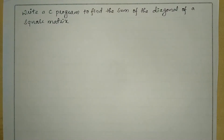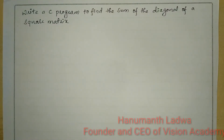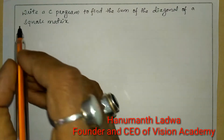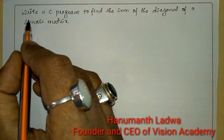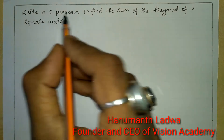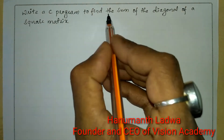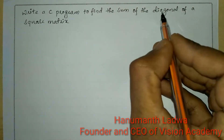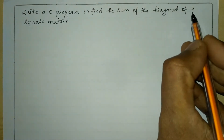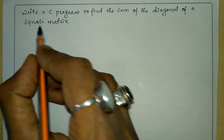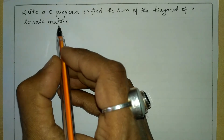Hello and welcome to Vision Academy. My name is Anmant Ladwa and in this video we are going to write a C program to find the sum of the diagonal of a square matrix.